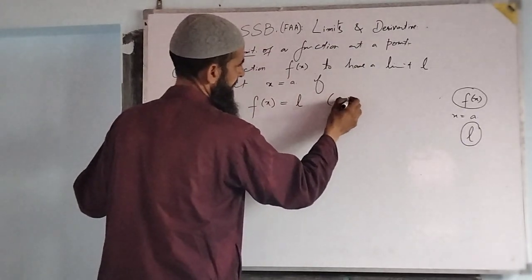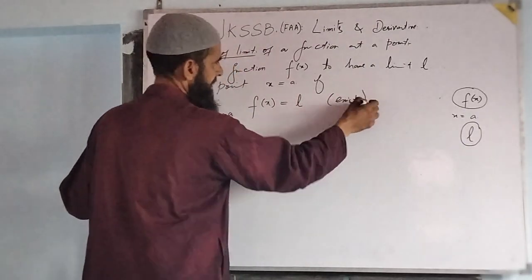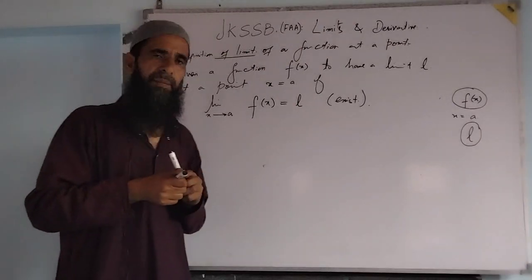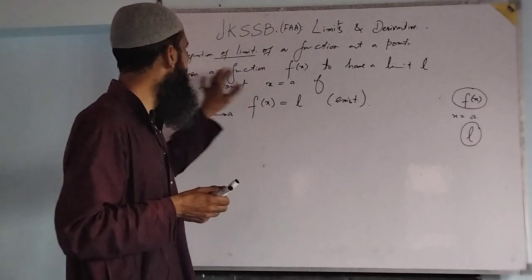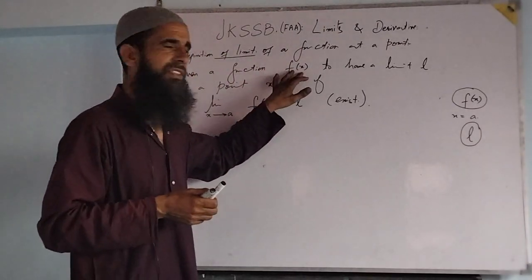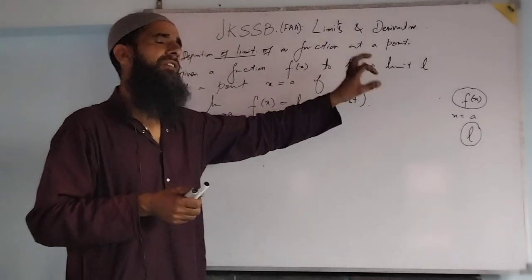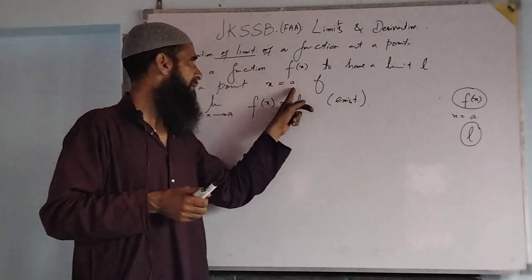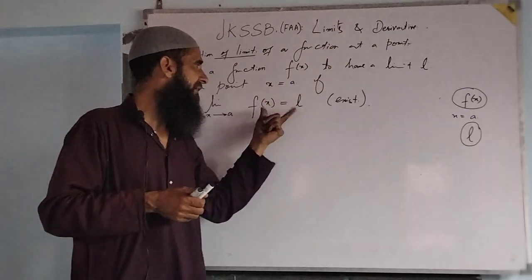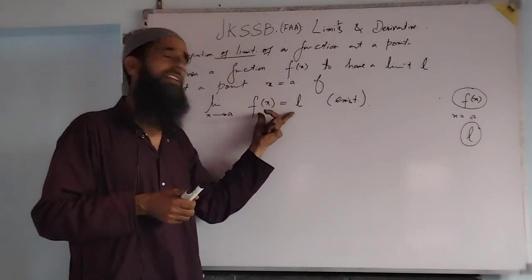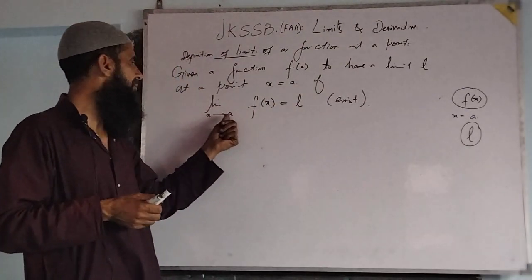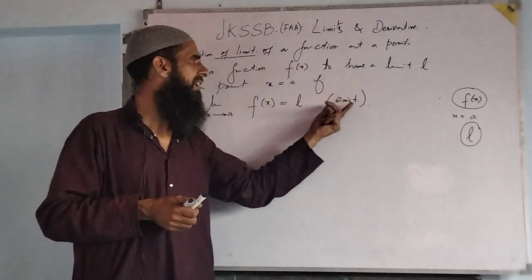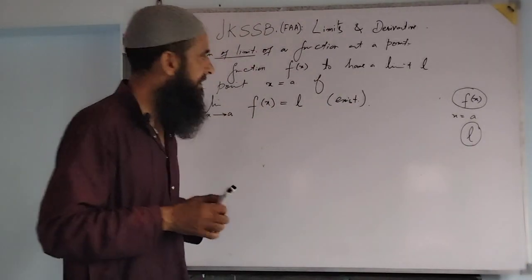The limit L exists. Definition: given a function f(x), to have a limit L at a point x = a, if this condition is satisfied — limit as x tends to a of f(x) is equal to L — exists finitely. That is the definition.